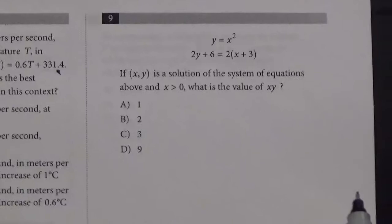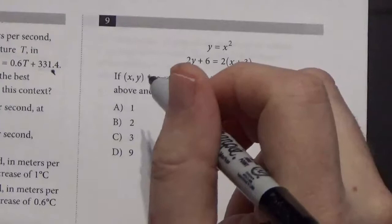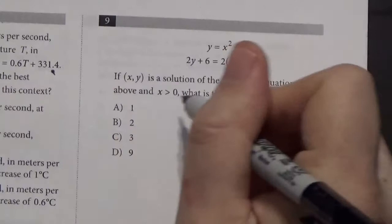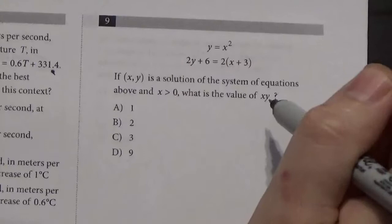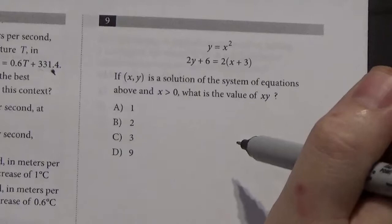Alright, on to number 9. System of equations, y equals x squared, 2y plus 6 equals 2 times x plus 3. If xy is the solution of the system of equations above, and x is greater than 0, what is the value of xy. So two things to pay attention here. First, x is greater than 0 suggests there may be more than one solution. And asking for the value of xy, which means that you may need to solve directly for the value of xy, as opposed to solving for x and then solving for y and then solving for the product xy. So let's see what we got here. We have y defined in terms of x. So y equals x squared, and then we have a second equation with both an x and a y in it. My first instinct on this question would be to do substitution, and that is substitute in x squared for y.